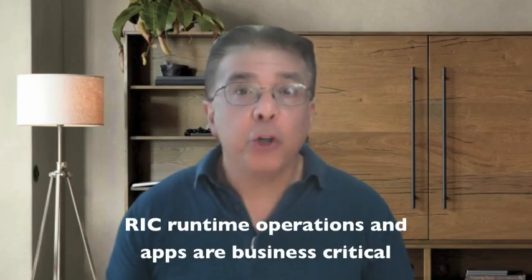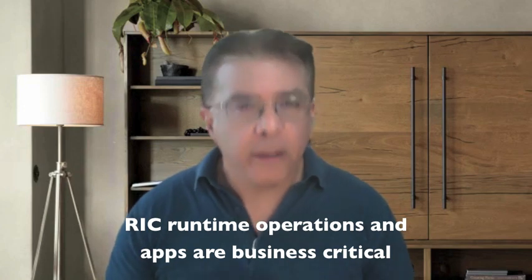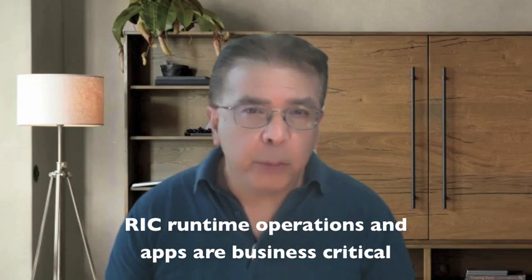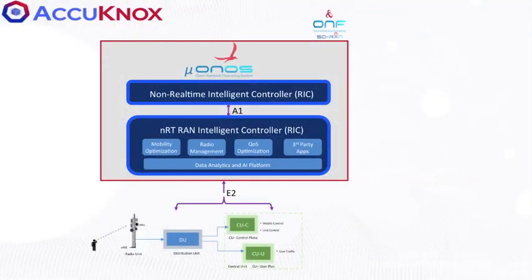The RAN Intelligent Controller is designed to run the control and management applications that govern 5G cell operations. These applications are highly business critical and raise several interesting considerations for security, which our team is looking to address. The RIC enables operators to deploy RAN control and policy generation — such as for radio management, mobility management, resource control, and performance optimizations — as applications, or X-Apps.